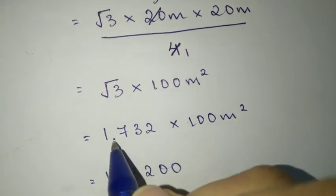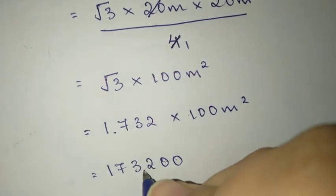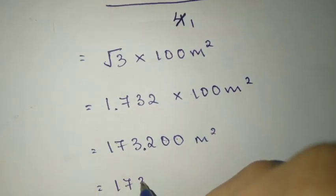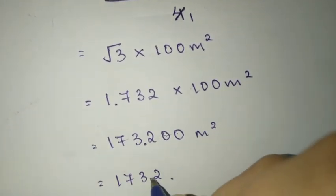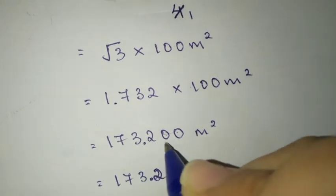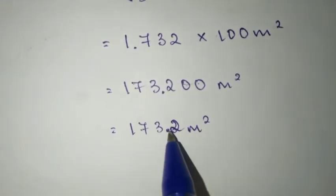When we substitute, we get root 3 times 100, which equals 1.732 times 100 equals 173.2 meter square. So the answer is 173.2 meter square.